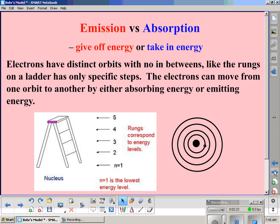First, let's talk about a couple of definitions. Emission is when an atom, or more specifically an electron, gives off energy, usually in the form of a photon.